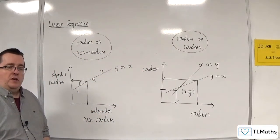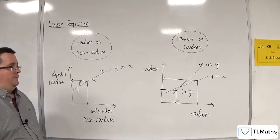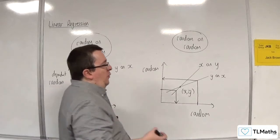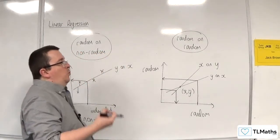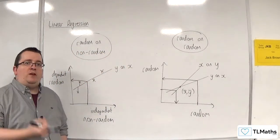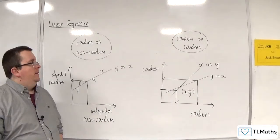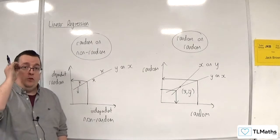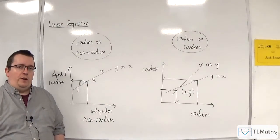So notice how I've got to go to different lines when doing that. You can only work out the x on y regression line when you've got a situation of it being random on random. If it's random on non-random, we have to only use the y on x regression line.